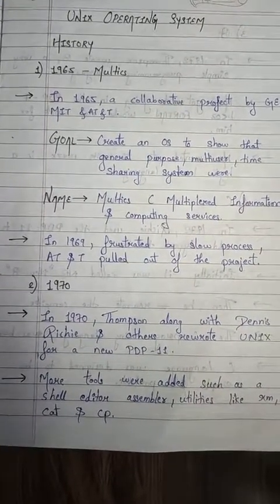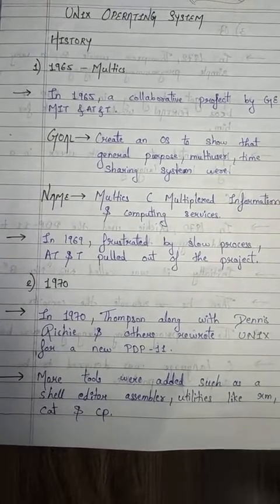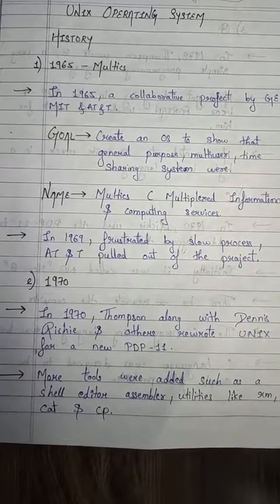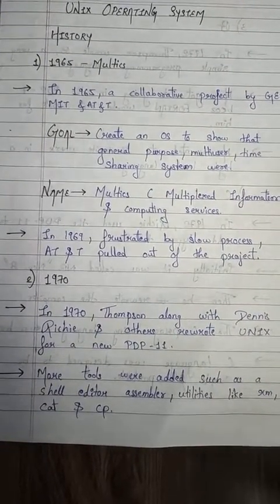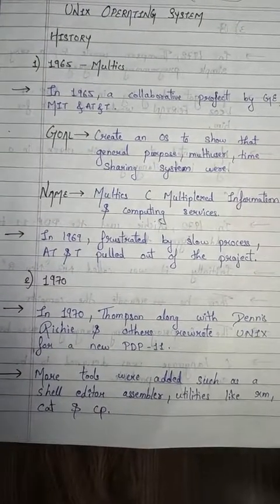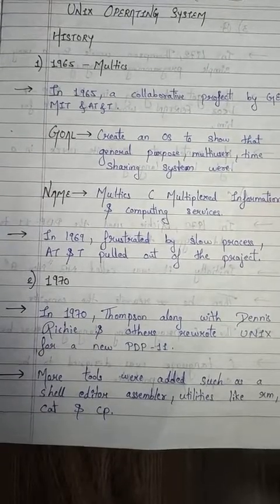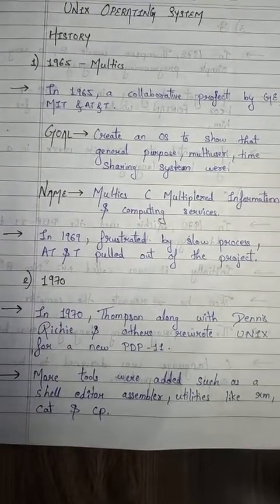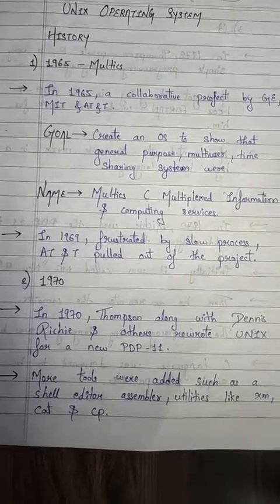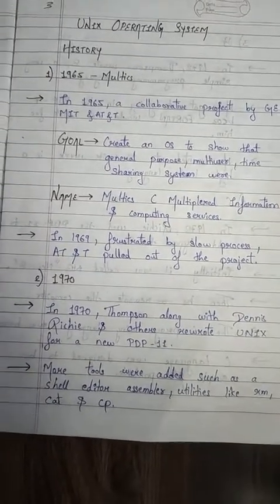After that, in 1970, Thompson and Dennis Ritchie re-wrote Unix for a new PDP-11. More tools were added such as shell, editor, assembler, and utilities like rm, cat, and cp. These are all commands — rm means remove, cat command, copy command — which we will discuss further ahead.